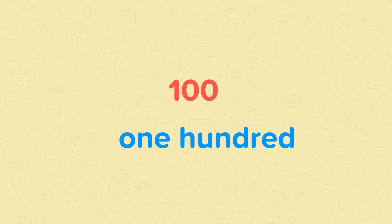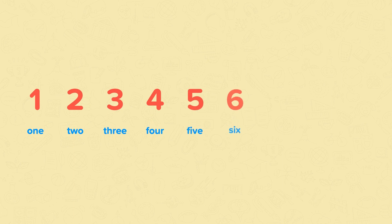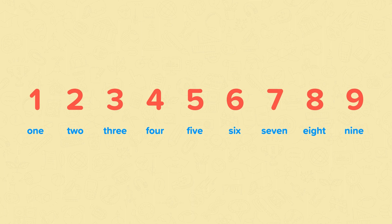First, we just need to recap the numbers 1 to 9. We've got 1, 2, 3, 4, 5, 6, 7, 8 and 9. We have the numerals on the top and the words underneath. Once you've mastered the spellings of these words, it will be much easier to spell numbers above 20. Now's the time to check that you can spell these 9 numbers. You may want to write them down. Pause the video now and have a quick practice.